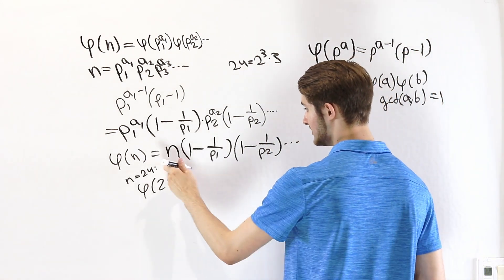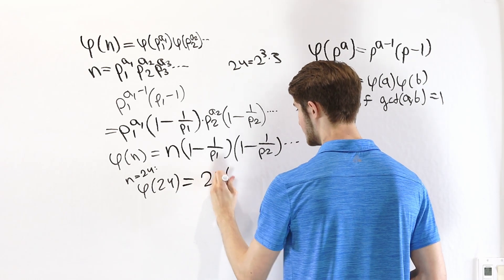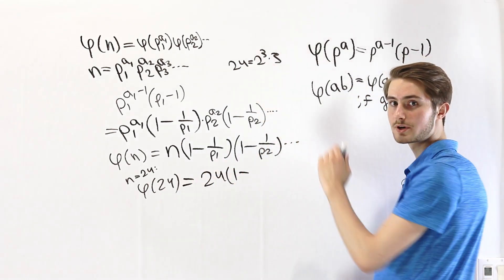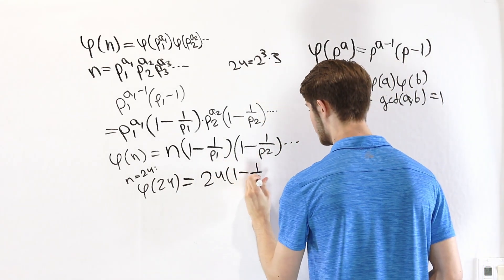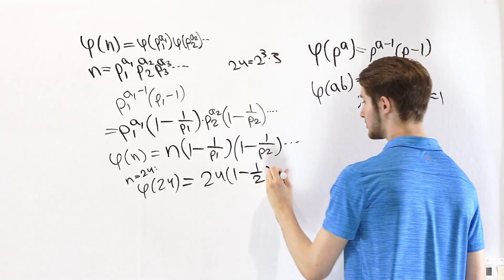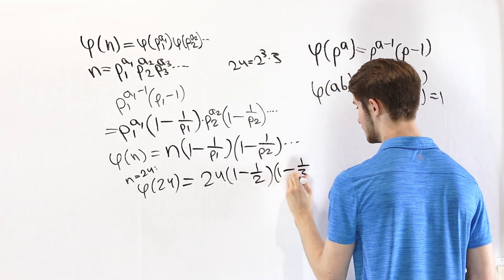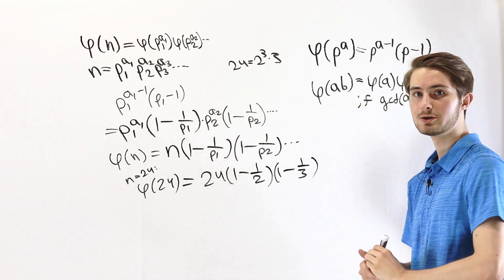So what we're going to get as our result is n, which is 24, times 1 minus, first prime factor is 2, so we have 1 over 2. Then second prime factor is 3, 1 minus 1 over 3. Those are the only prime factors. So this is the totient function of 24.